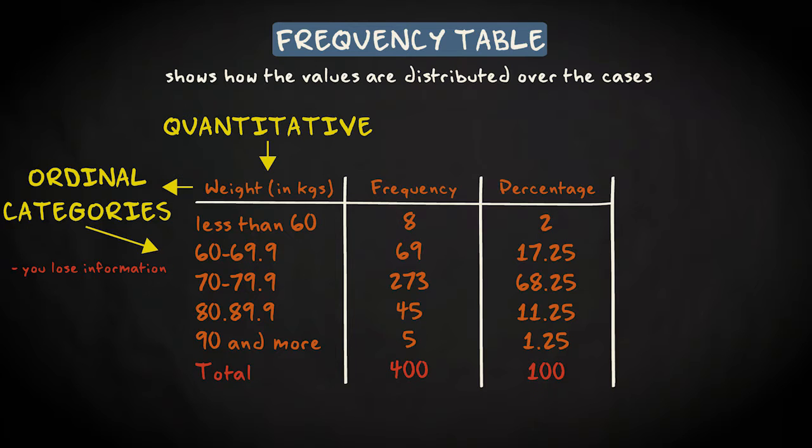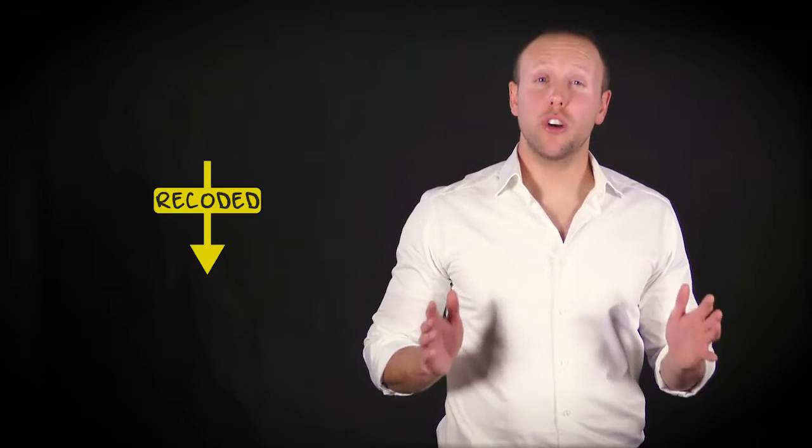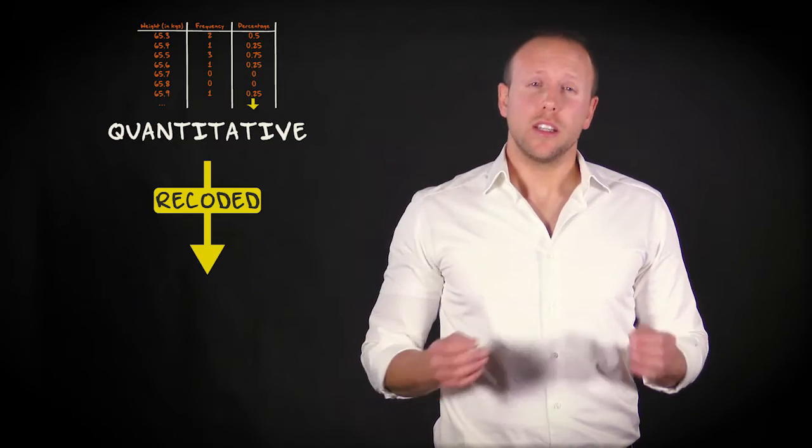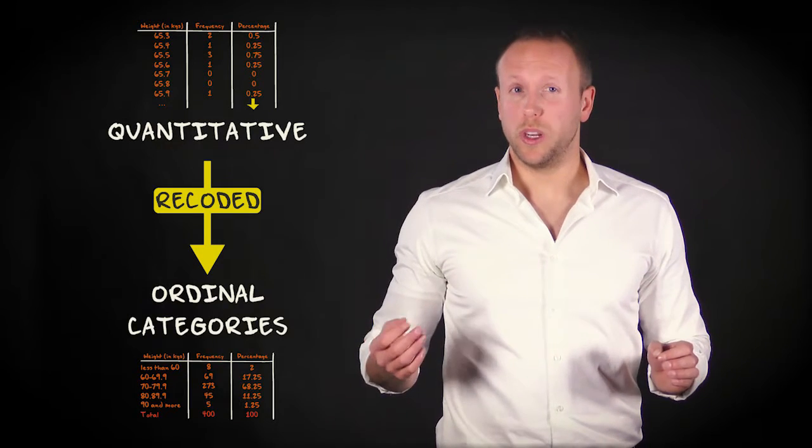This way you lose information, but the advantage is that you get a much better overview. We say that you have recoded the variable. The variable weight was a quantitative variable that you've turned into an ordinal variable with only 5 categories.